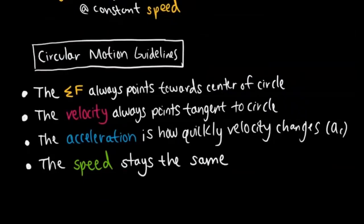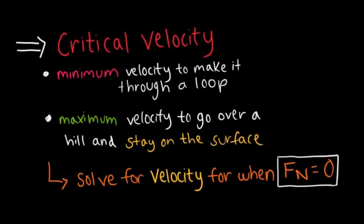For circular motion free body diagrams, there are no new forces, but key caveats apply: the net force always points toward the center of the circle; velocity is tangent to the circle; acceleration AC is how quickly velocity changes — don't draw velocity or acceleration on a free body diagram. Speed stays constant. Critical velocity is the minimum or maximum velocity needed to complete a loop, go over a hill, or stay on a surface — found by setting the normal force to zero and solving for velocity.